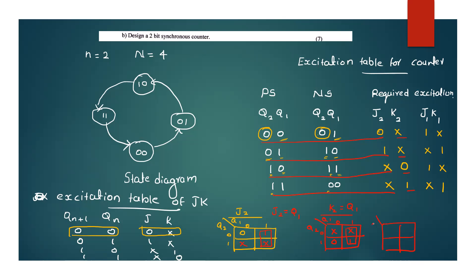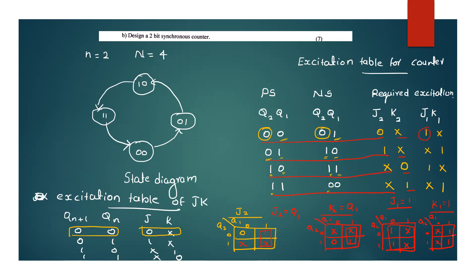Now let's look at J1 and K1. The K-map for J1 has Q2 and Q1 axes with values 0, 1, 0, 1. J1 takes the value 1 across all relevant entries, giving J1=1. For K1, the K-map gives values with X entries and 1 values, resulting in K1=1. We can therefore write: J1 equals K1 equals 1, and J2 equals K2 equals Q1.